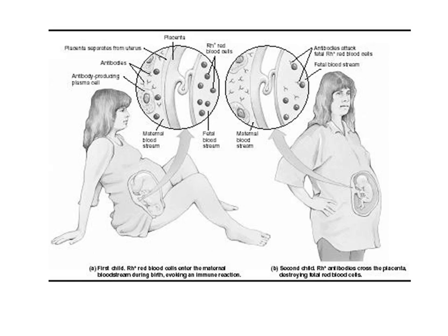We know the pathogenesis of RH incompatibility. Here the RH positive baby is carried by an RH negative mother. During the first pregnancy, the RH positive erythrocytes enter the maternal circulation, stimulating the production of anti-RH antibodies in the mother.